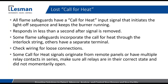Another point is that some flame safeguards have the call for heat going through the same terminal as the interlock string — your low gas, high gas, combustion air pressure interlocks — all of the ones you normally see feeding into the flame safeguard. Once all interlocks are satisfied, it goes through the light-off sequence. You should be aware of which type of flame safeguard you have and how that call for heat is being introduced into the system. Know that if you have a system that turns the burner off but doesn't cause an alarm, it's most likely coming from a loss of the call for heat signal.